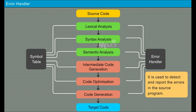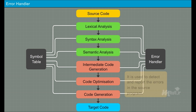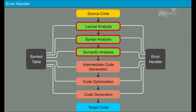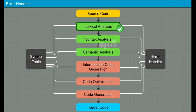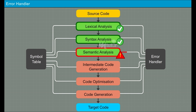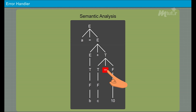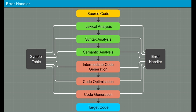The error handler is used to detect and report errors in the source program. Errors may occur in all or any one of the phases of a compiler. Whenever a phase spots an error, it reports the error to the error handler, which sends an appropriate diagnostic message. Both the symbol table and the error handler interact with all the phases of the compiler.